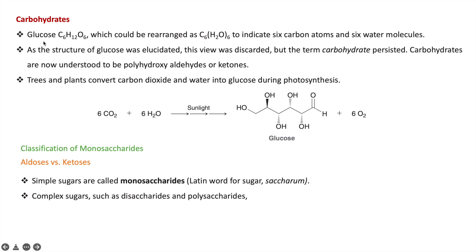The formula of glucose is C6H12O6. If you rearrange this formula, you can write it as C6(H2O)6 — showing it as a hydrated form of carbon. That is why the name 'carbohydrate' came about: six carbon atoms attached with six water molecules, meaning the carbon is hydrated.